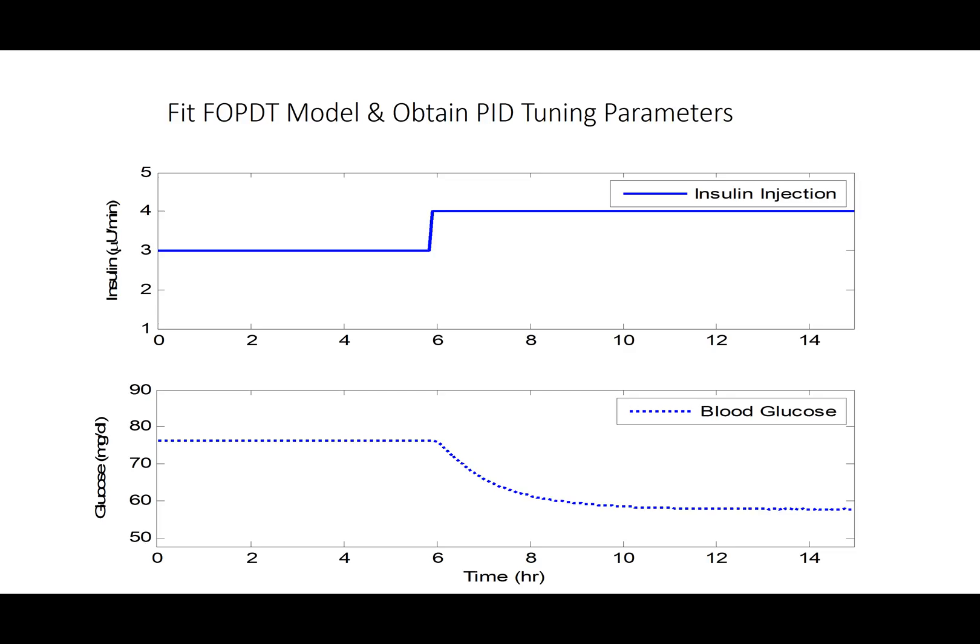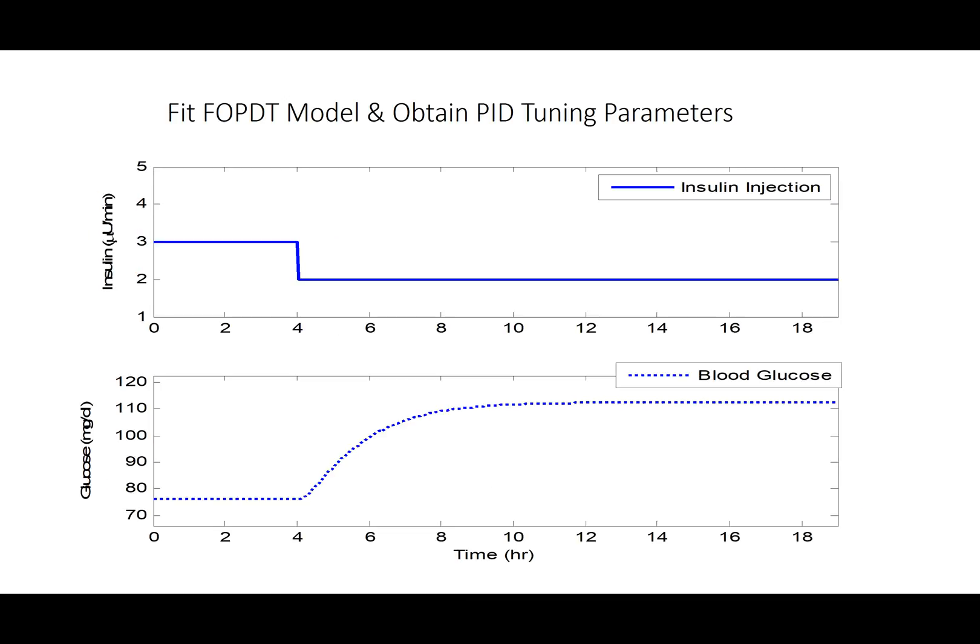Okay, the very first thing we're going to do is develop a model of a person's body. There are a number of good models out there in the literature. We're just going to use a very simple one here. And we're going to step up the insulin injection rate from 3 microunits per minute up to 4. Okay, and when we do that, then we're going to see a drop in the milligrams per deciliter. We're going to see a drop from just kind of a nominal value. It's going to drop because I have the insulin increasing.